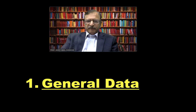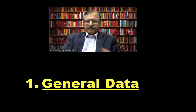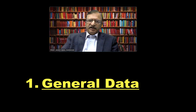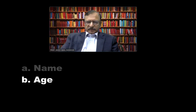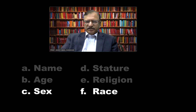The parameters which are used include the general data about the individual — like the name, age, sex, residential address, and other general data that is gathered. Name, age, sex, stature, religion, race, and so on can be collected.